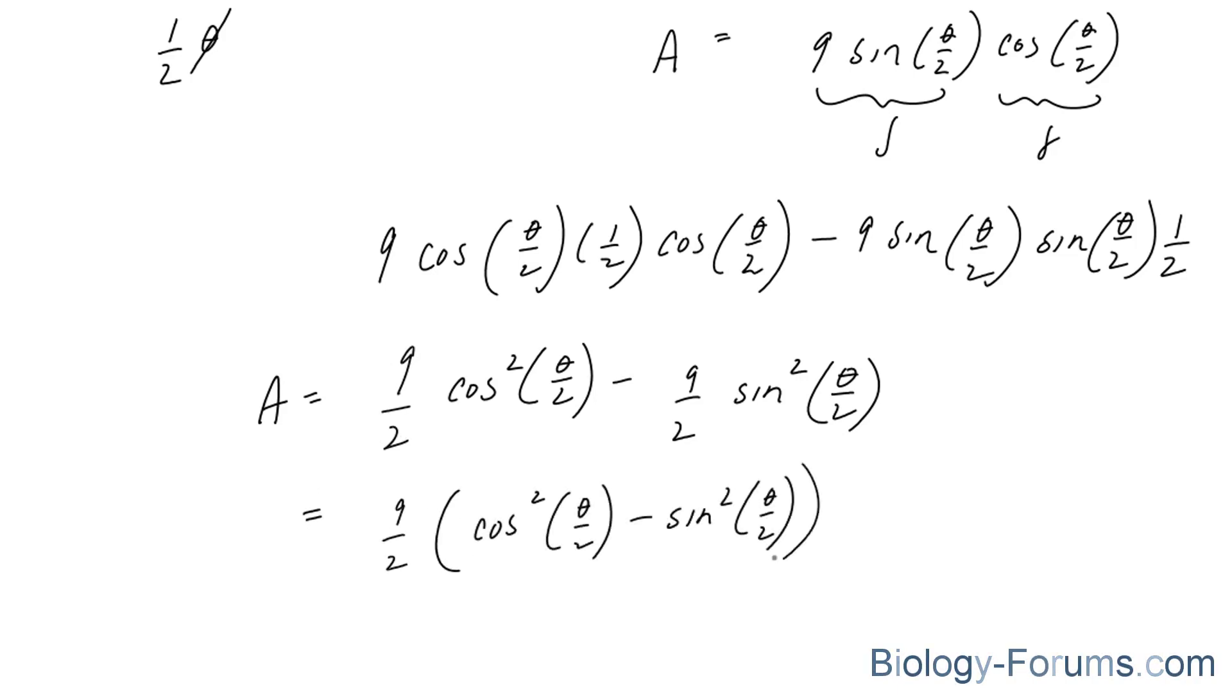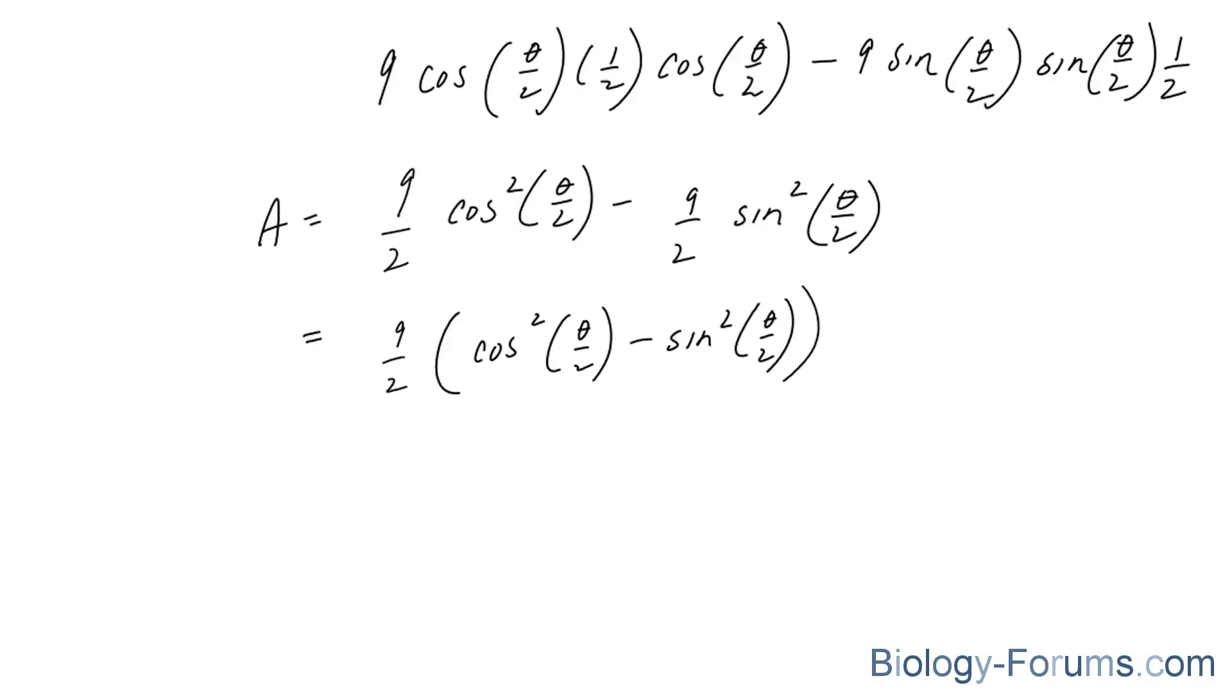The next step is to set this derivative equal to zero so that we can find the critical points, as we did in all the other examples before. So we're going to set A prime equal to zero.